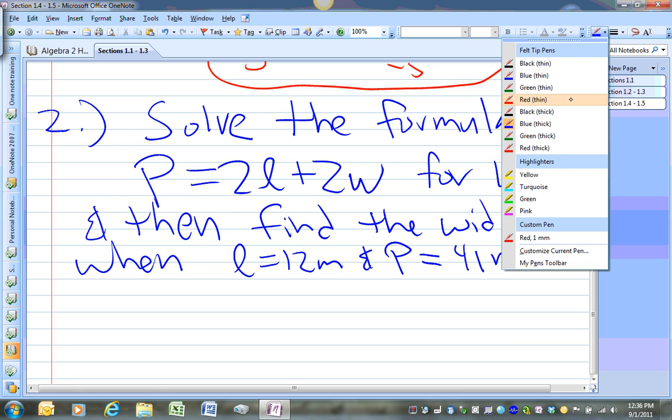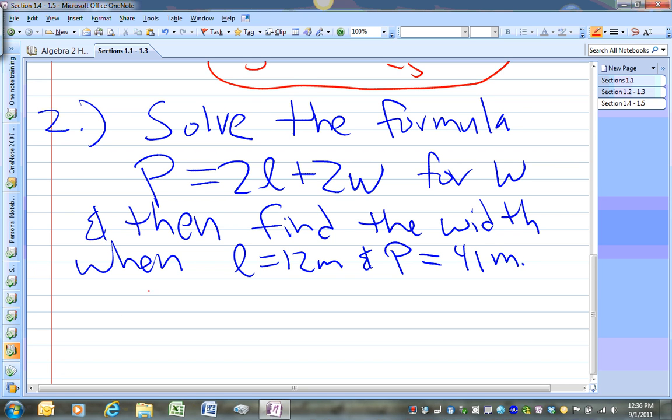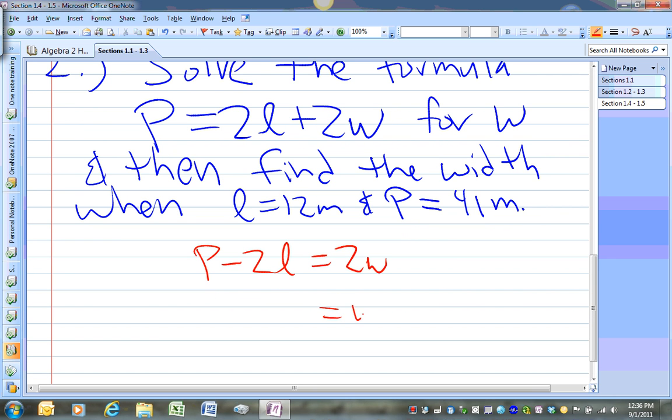So, changing the colors here. Let's go to red again. So you want to get W by itself. So P minus 2l is going to equal 2w. W is going to equal P minus 2l over 2.